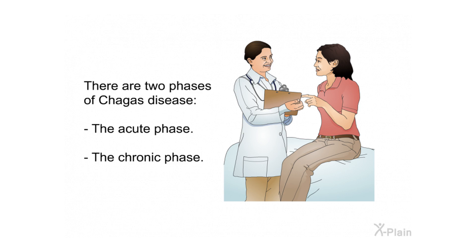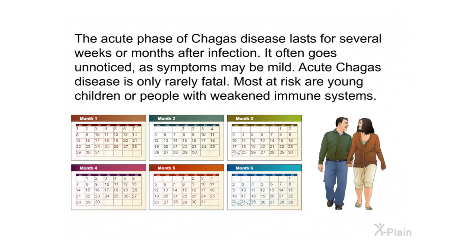Once inside the body, the parasites multiply in cells. Infected cells burst, releasing parasites into the bloodstream. There are two phases of Chagas disease: the acute phase and the chronic phase. The acute phase lasts for several weeks or months after infection. It often goes unnoticed as symptoms may be mild. Acute Chagas disease is only rarely fatal. Most at risk are young children or people with weakened immune systems.